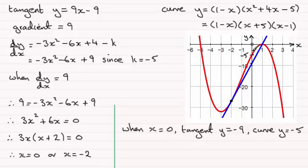At this point here where x is 0 on the curve y equals minus 5, the gradient of the tangent would be 9. It would be parallel to this tangent here. But as you can see the y values are inconsistent. This one here is minus 9.